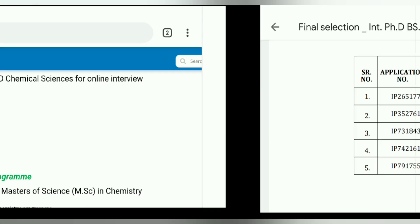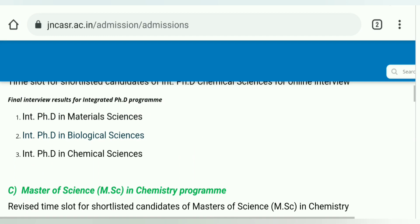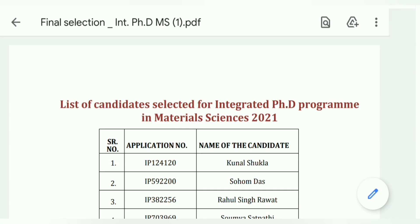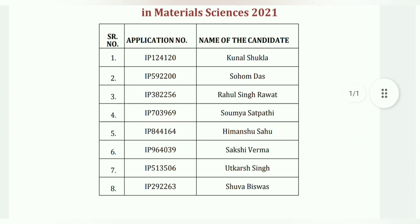After that, material science — material science should show the selection list. 8 students will be added. Student has application number, name, serial number — all given. An email will also be sent to them with instructions.